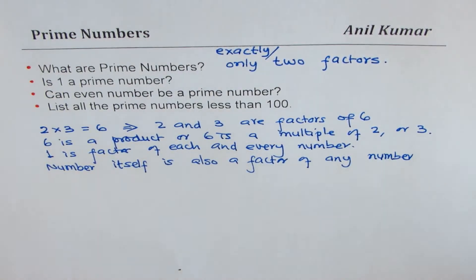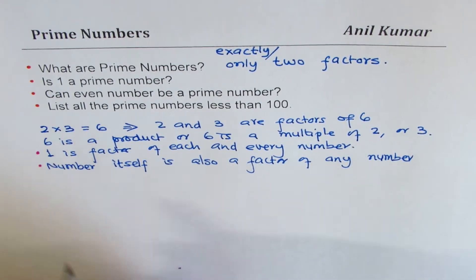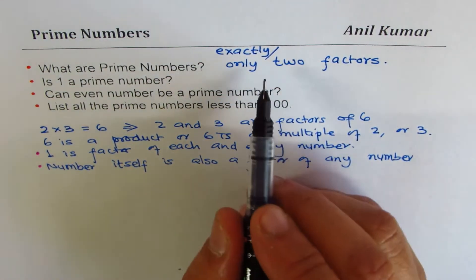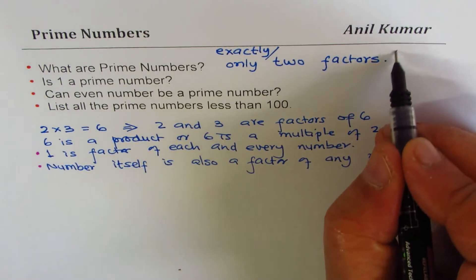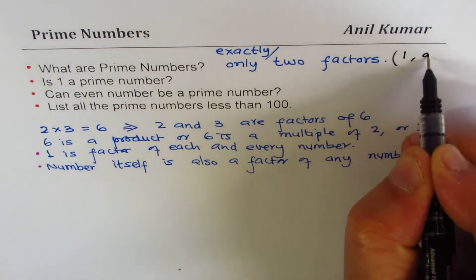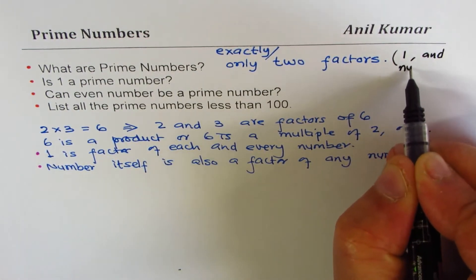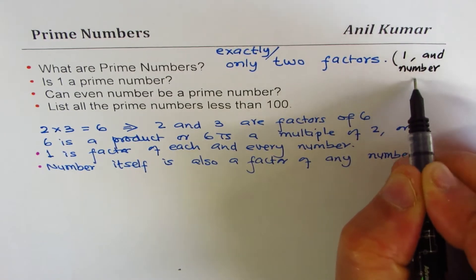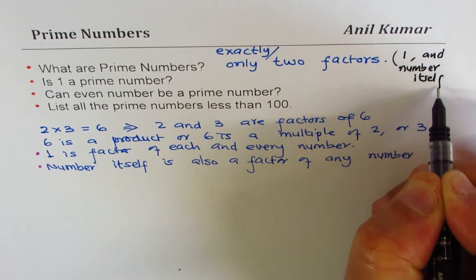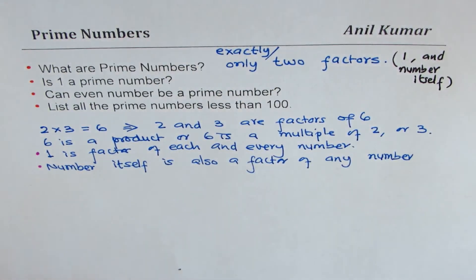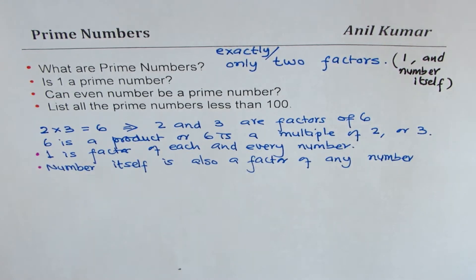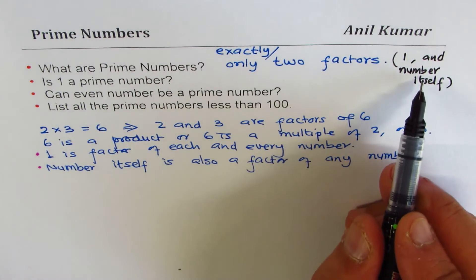So clearly, we have two things here. Prime numbers have exactly two factors and these two factors are one and number itself. These are the numbers which multiply to get you the number.